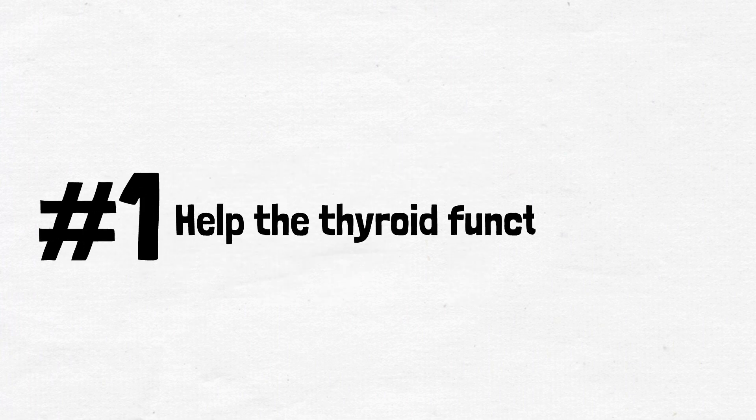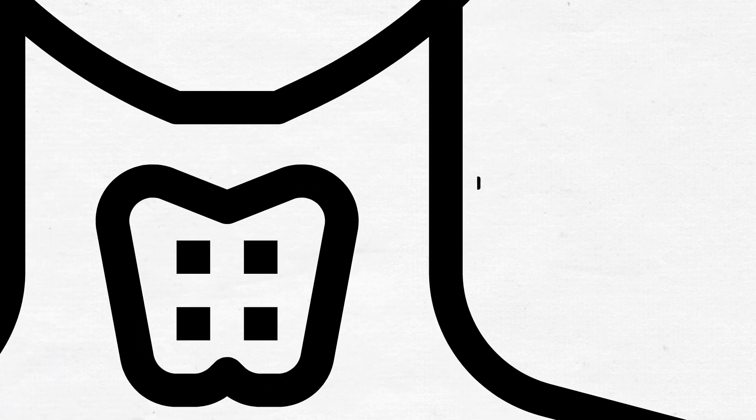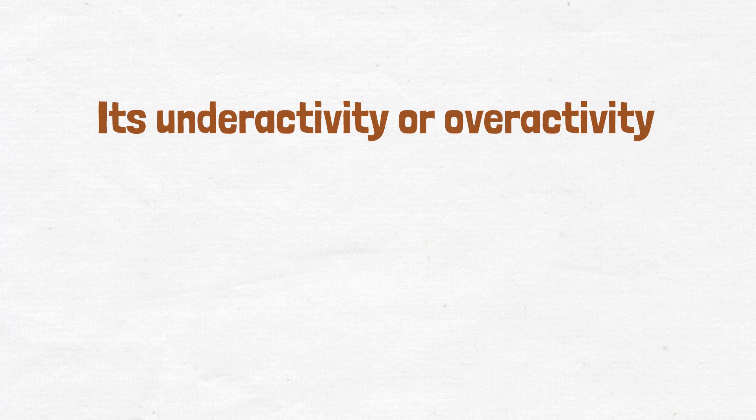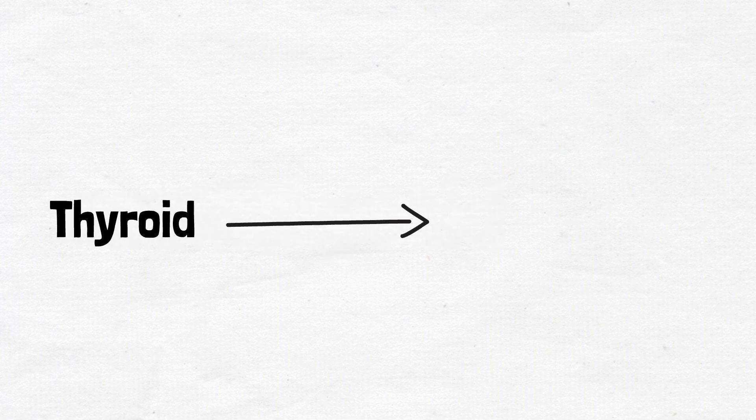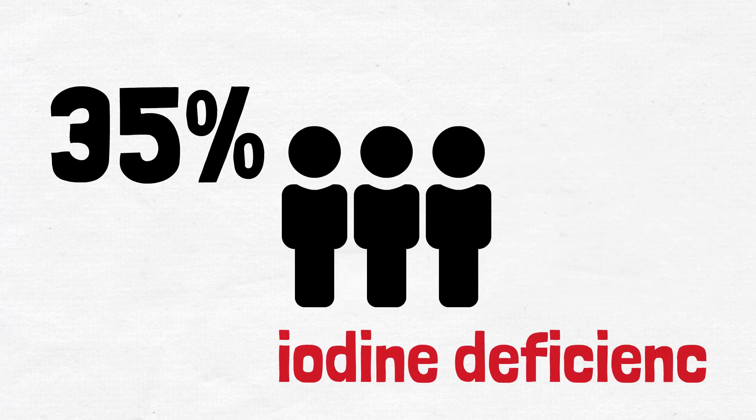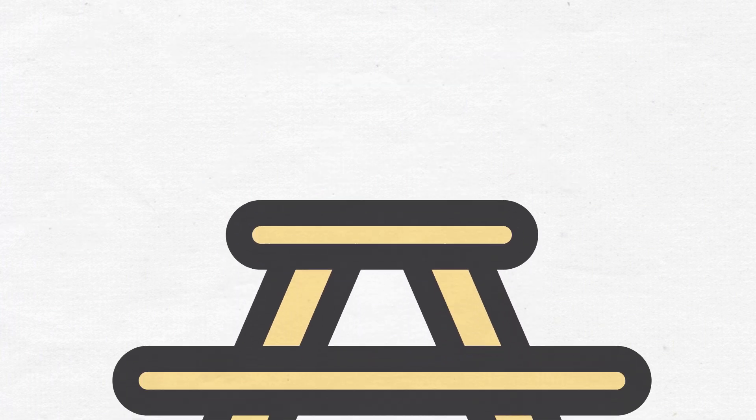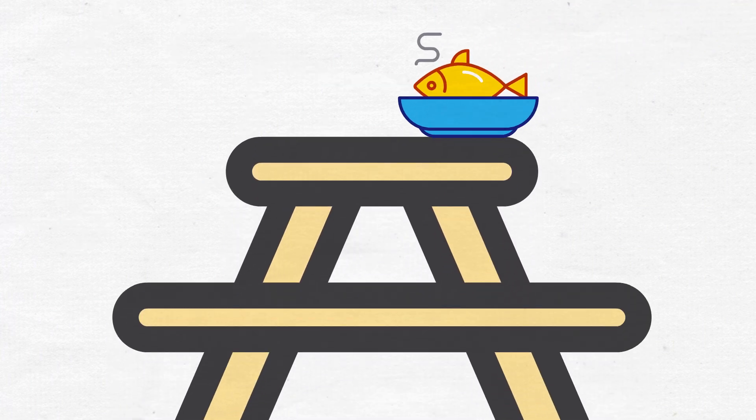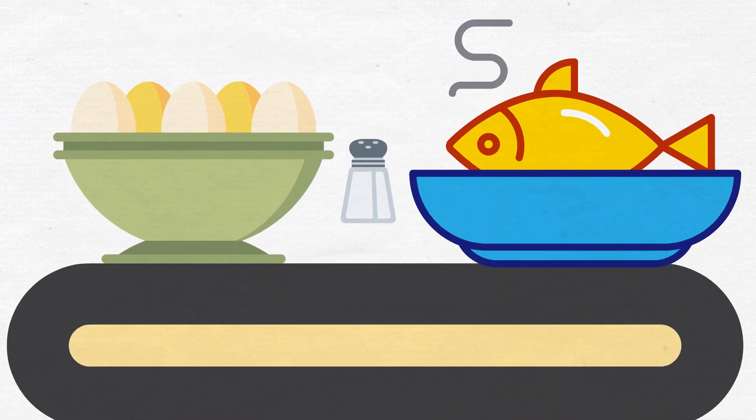The first thing is to help the thyroid function properly. This gland located in the neck has a special role in regulating our metabolism. Its underactivity or overactivity can cause obesity or thinness. The thyroid needs iodine to make its hormones, but unfortunately 35 percent of people have iodine deficiency, which causes the thyroid to not function properly. The body can obtain iodine from sources such as fish, shrimp, seaweed, eggs, and iodized salts.